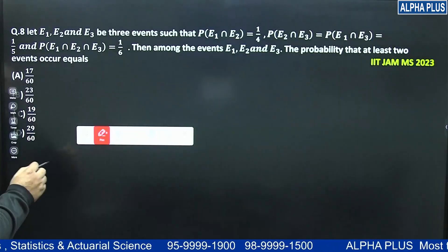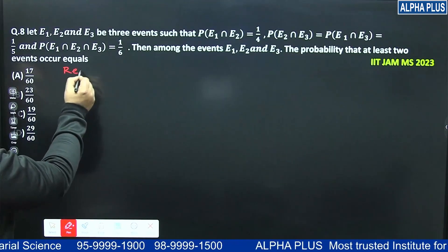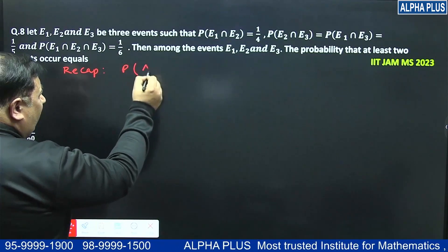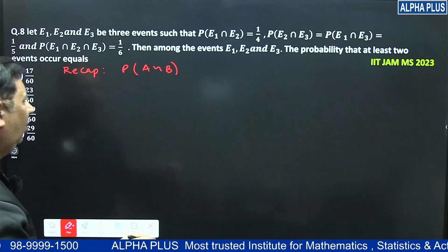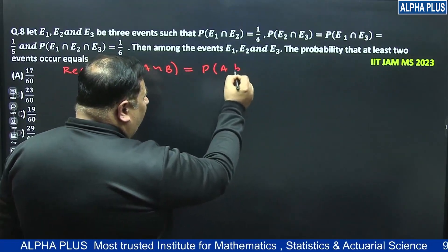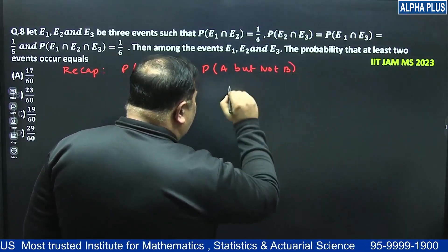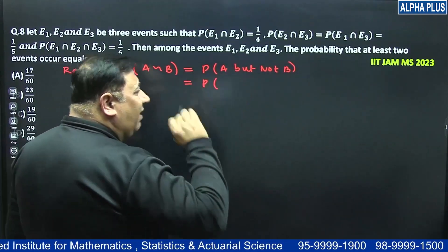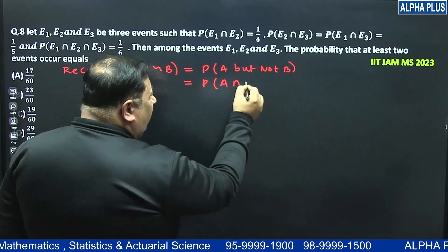But we need a small recap. So what is that recap? Please understand the concept. Probability of A difference B — A difference B means A but not B. So students, if you remember from class 12, 'but' and 'and' have the same meaning, that is intersection. And 'not B' means B complement.